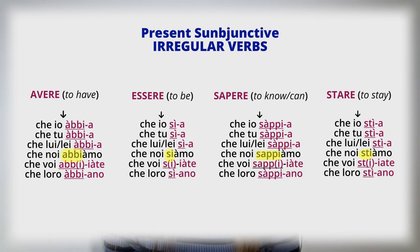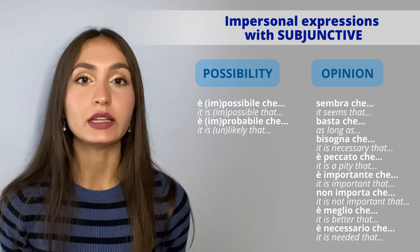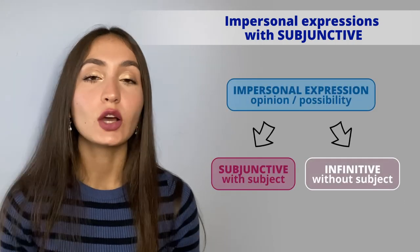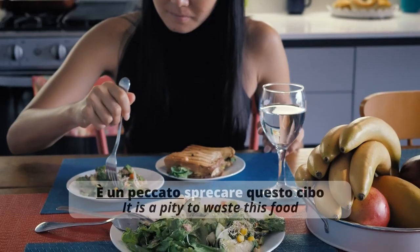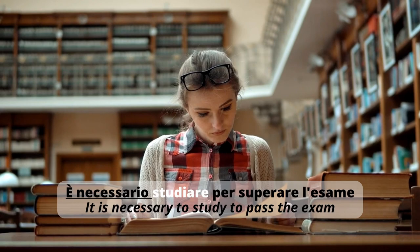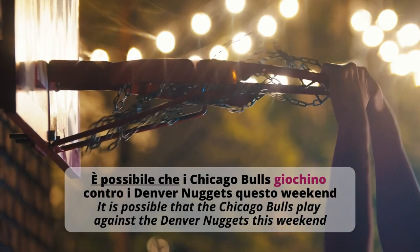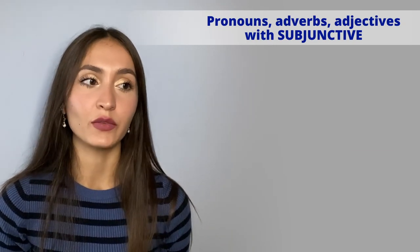Other irregular verbs always use the 'noi' root of the present indicative for all forms — for example: avere, essere, sapere, and stare. Here is a complete list of impersonal expressions indicating possibility and opinion that introduce a dependent clause requiring the subjunctive after 'che.' Remember that if there is no subject in the dependent clause, you can directly use the infinitive of the second verb. The subjunctive mood is also used with certain pronouns, adverbs, and adjectives.